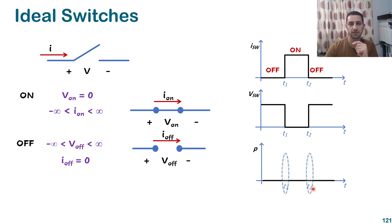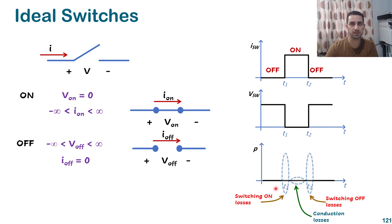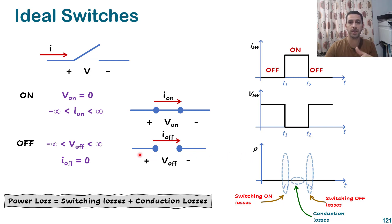These two transition moments are called the switching losses — switching-on losses and switching-off losses. The period when the switch is fully on with current flowing is called the conduction period, and that gives conduction losses. For the ideal switch, all of these are zero, so the total power dissipation ideally should be zero. The total dissipation of any switch is the sum of switching-on losses, switching-off losses, and conduction losses.